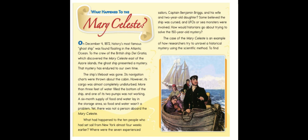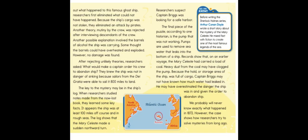Yet there was not a person aboard the Mary Celeste. What happened to the ten people who had set sail from New York almost four weeks earlier — the seven experienced sailors, Captain Benjamin Briggs, his wife, and two-year-old daughter? Some believed the ship was cursed and that UFOs or sea monsters were involved. Researchers used the scientific method to solve the mystery, first eliminating what could not have happened. Because the cargo was not stolen, they eliminated piracy. Mutiny was rejected after interviewing crew descendants.